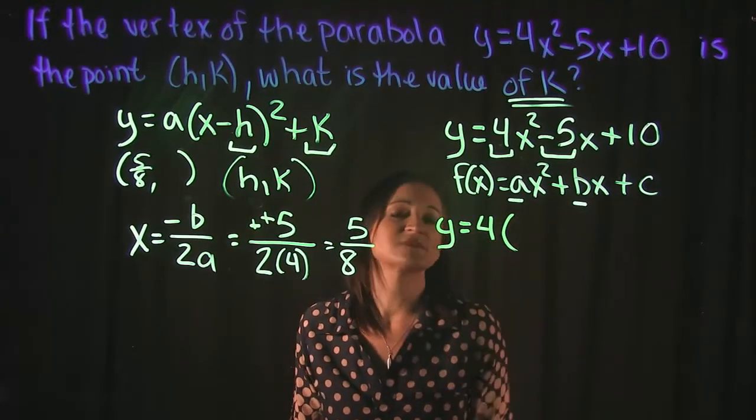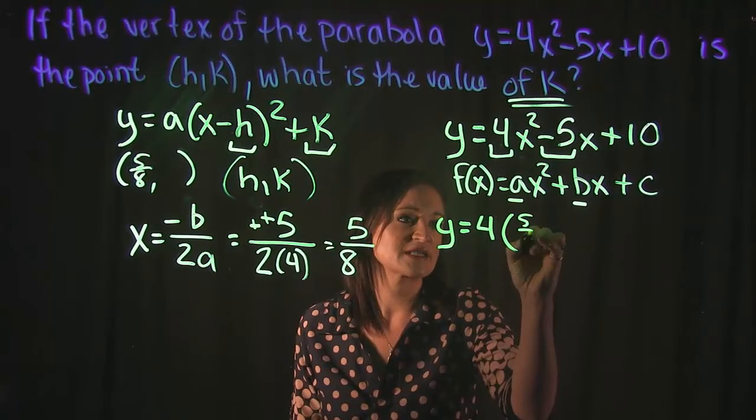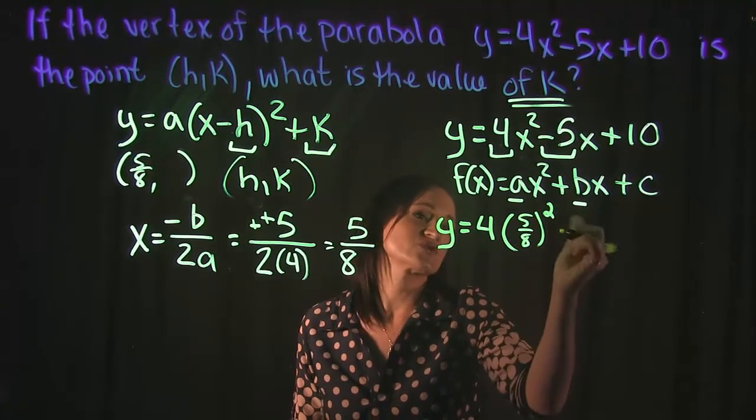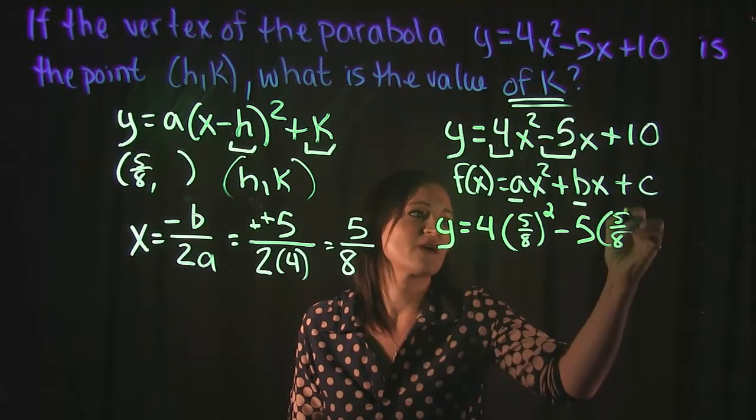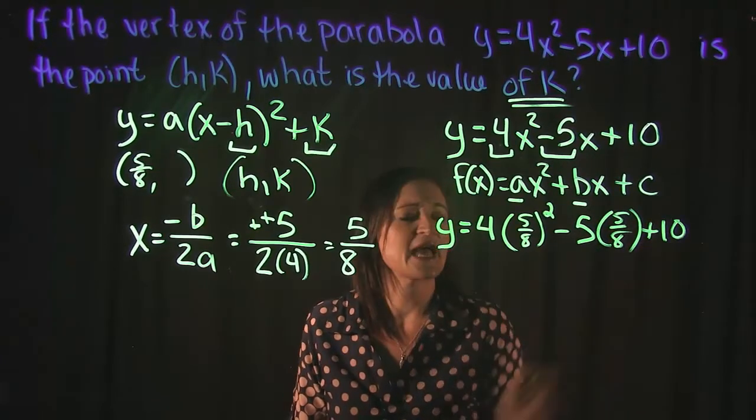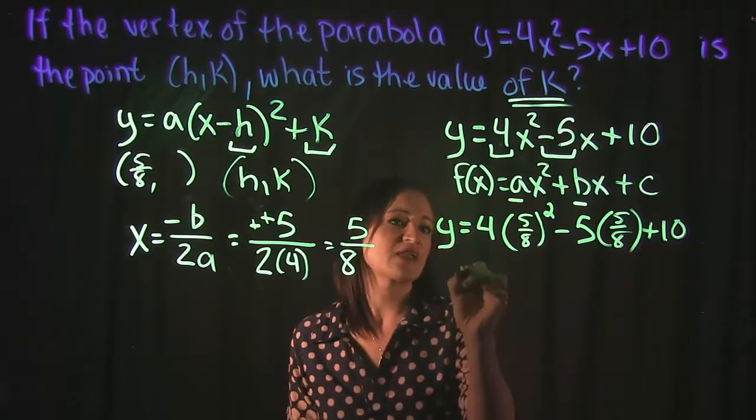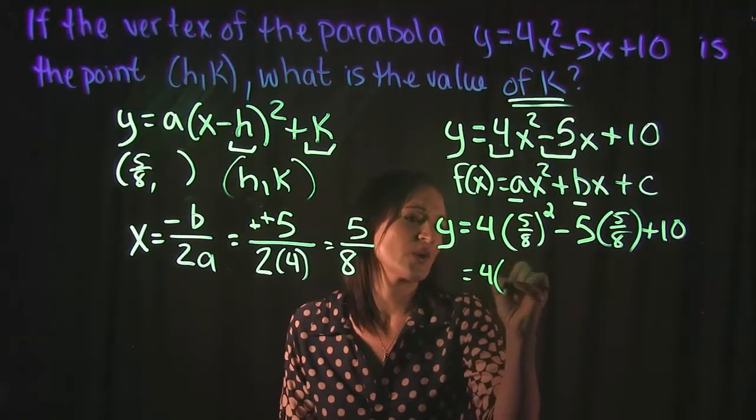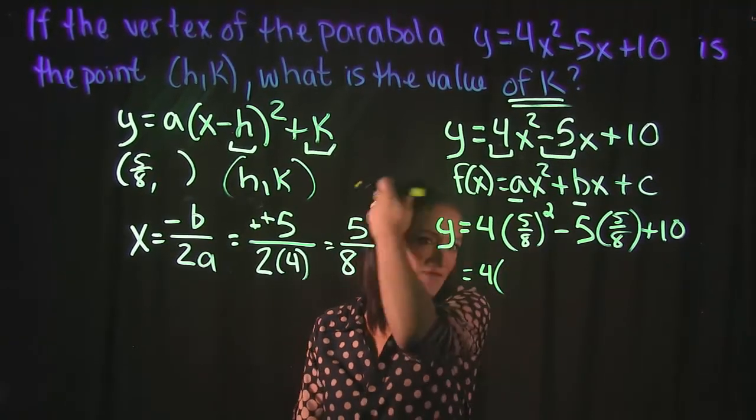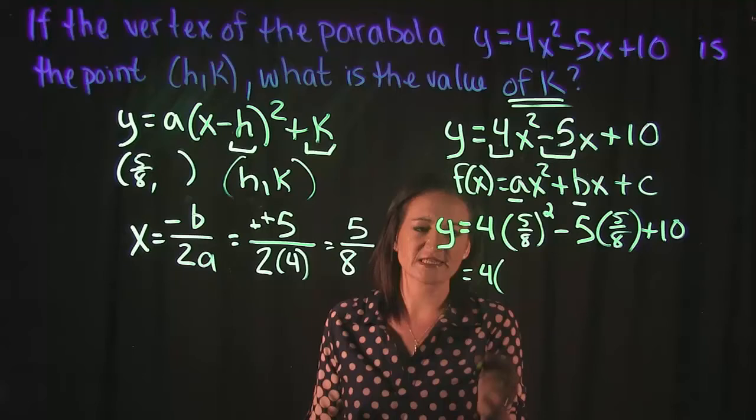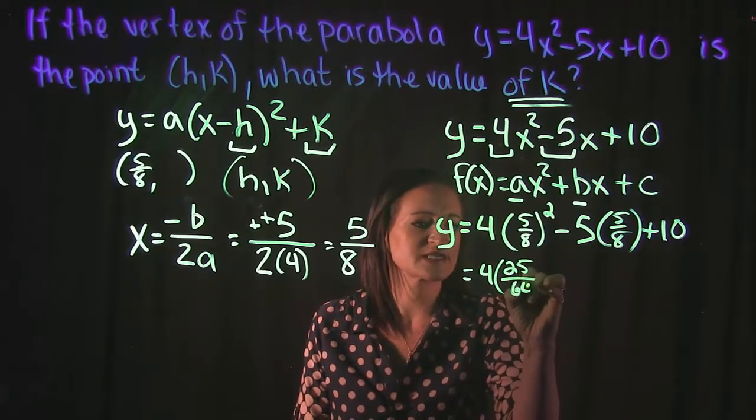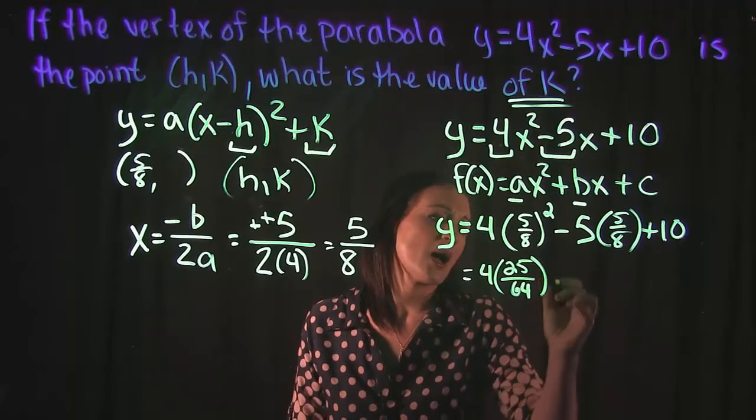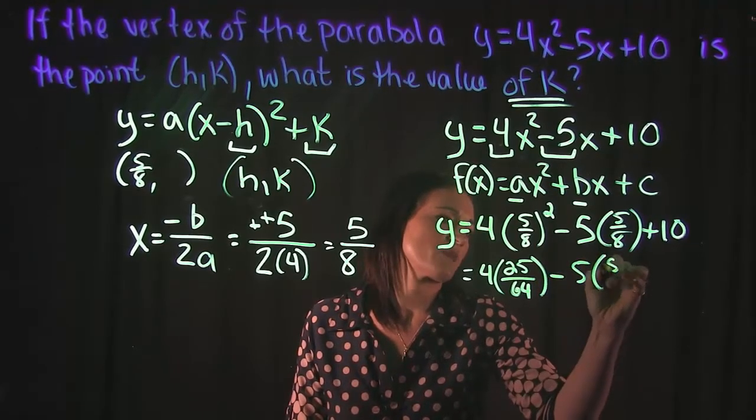That would be 4 times x², and remember our x is 5/8, so squared, minus 5 times x, so that's 5 times 5/8, plus 10. Simplifying this, working with our exponent, we have (5/8)², so that's 5/8 times 5/8, which is 25/64.